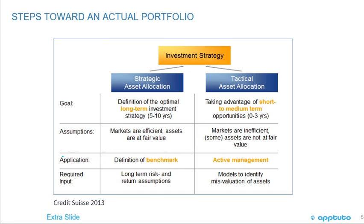We're going to finish this LOS with a slide that is outside the curriculum — credit to Credit Suisse, a document from 2013. It ties together the assumptions of markets being efficient with assets at fair value versus markets being inefficient where some assets are not at fair value. When talking about strategic asset allocation, the goal is defining the optimal long-term investment strategy over 5 to 10 years. For tactical asset allocation, we're looking at taking advantage of short to medium term mispricings, in a time frame of 0 to 3 years.